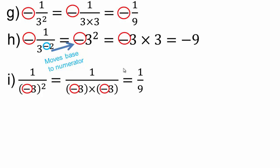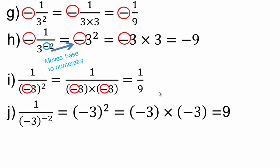Here we just have negative 3 squared, so just evaluate it. If the base is positive, do you need to move it? No. But if the base is negative, then it moves and goes to the numerator. If it's in the numerator, it will go to the denominator. If it's in the denominator, it will go to the numerator.